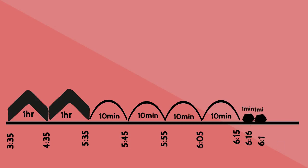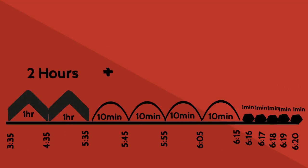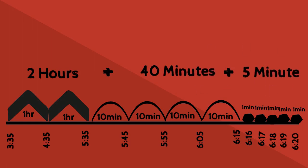One minute past 6:15 is 6:16, one more is 6:17, one more is 6:18, one more is 6:19, and one more is 6:20. Now I'll count all the hours, 10-minutes, and 1-minutes I moved forward: two 1-hours, four 10-minutes which makes 40 minutes, and five 1-minutes which makes 5 minutes. All together that is two hours and 45 minutes.